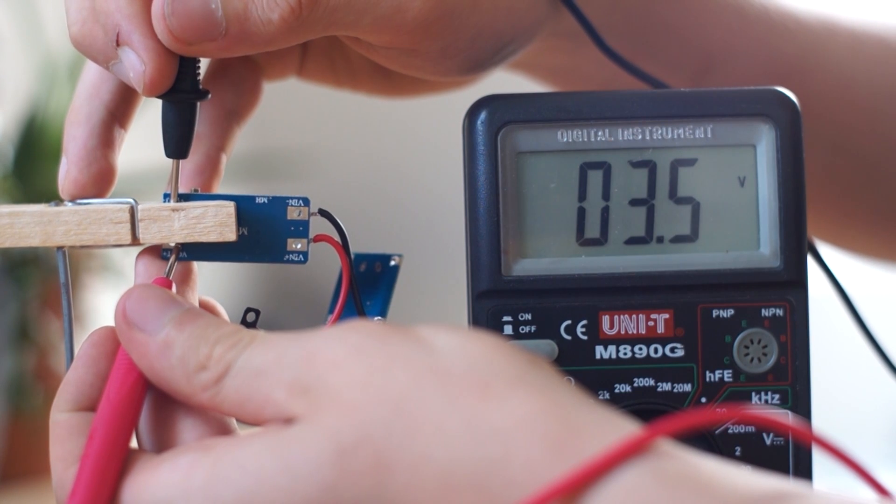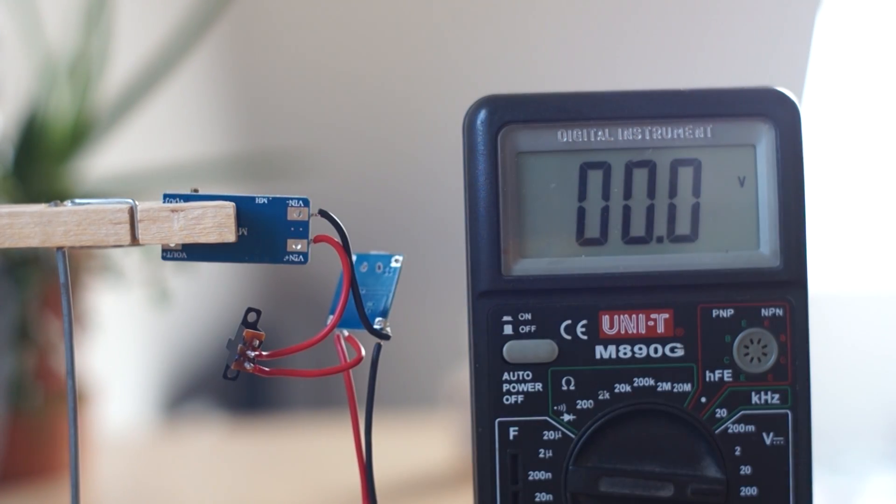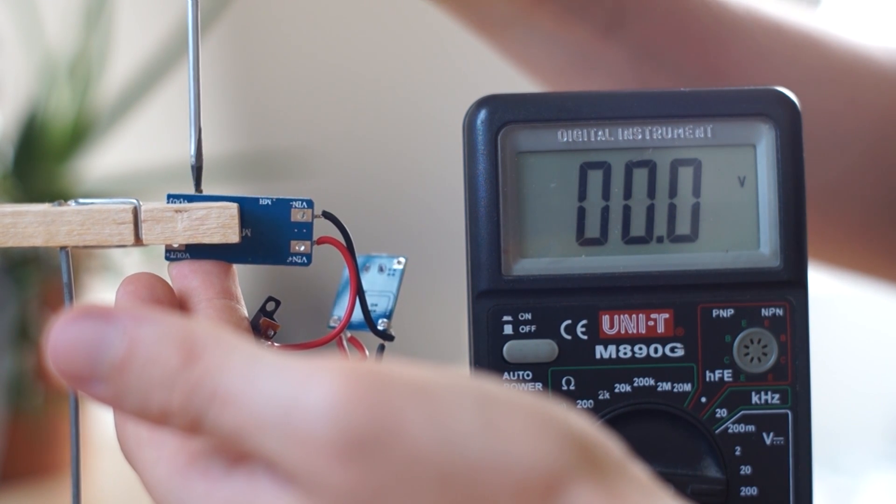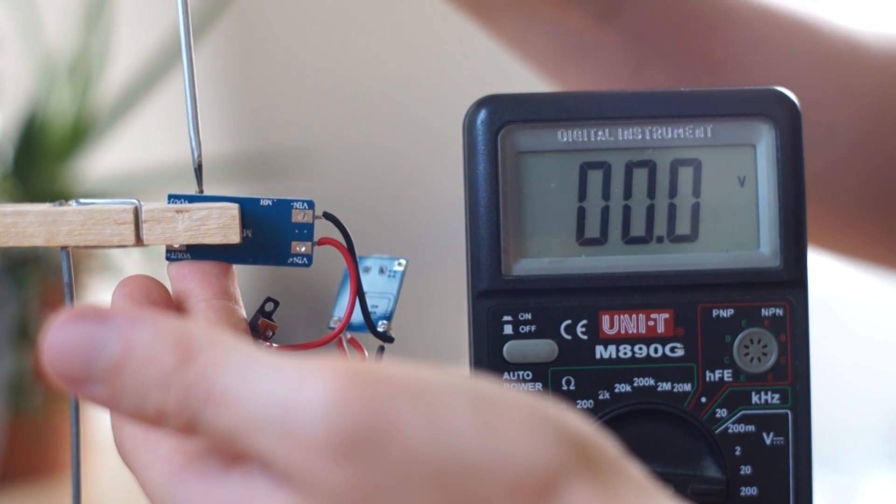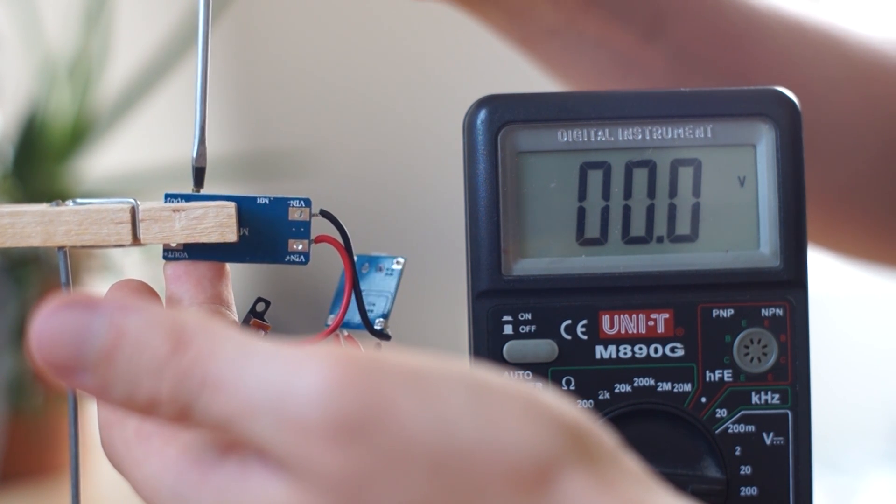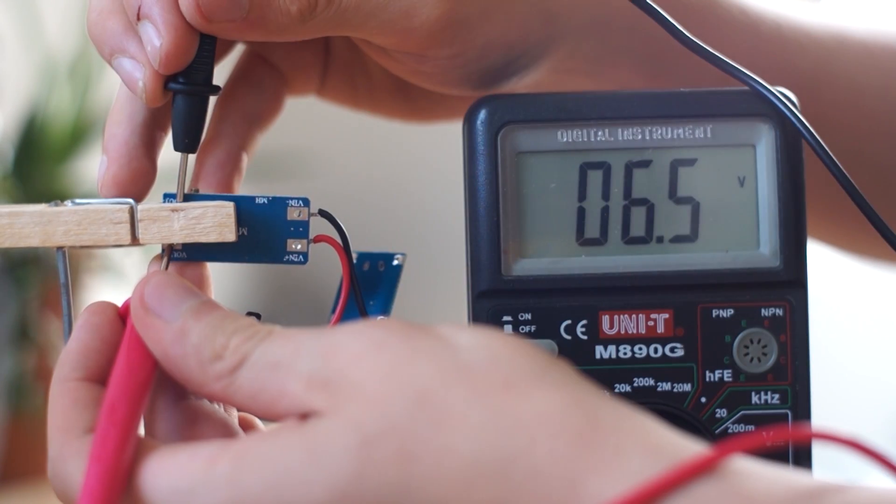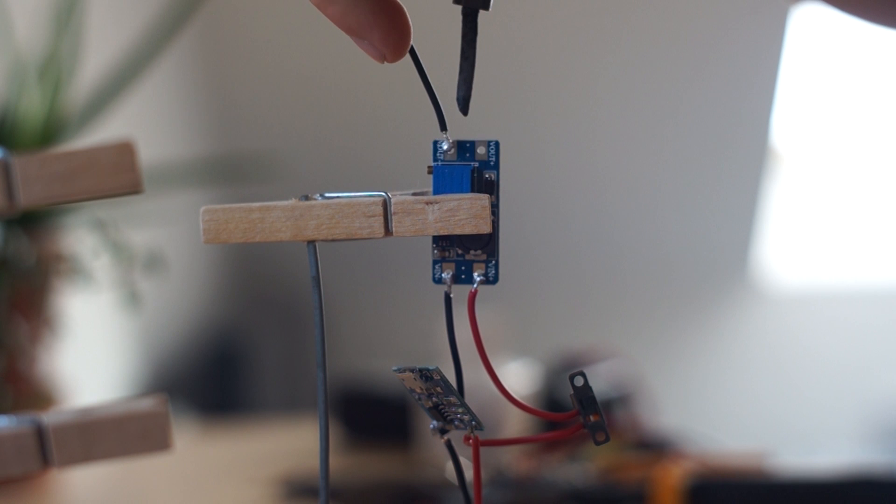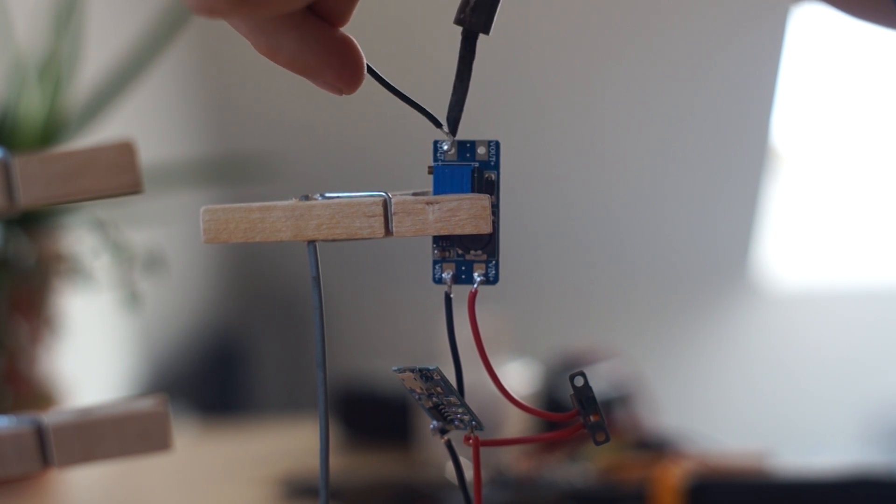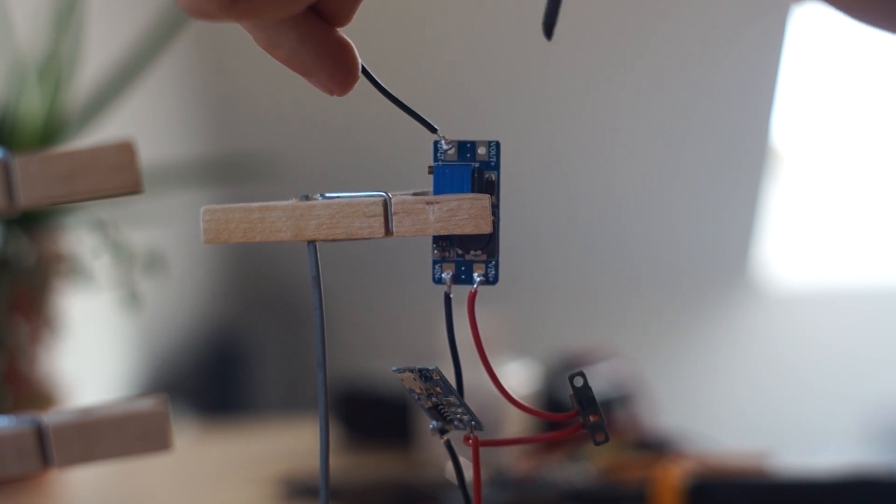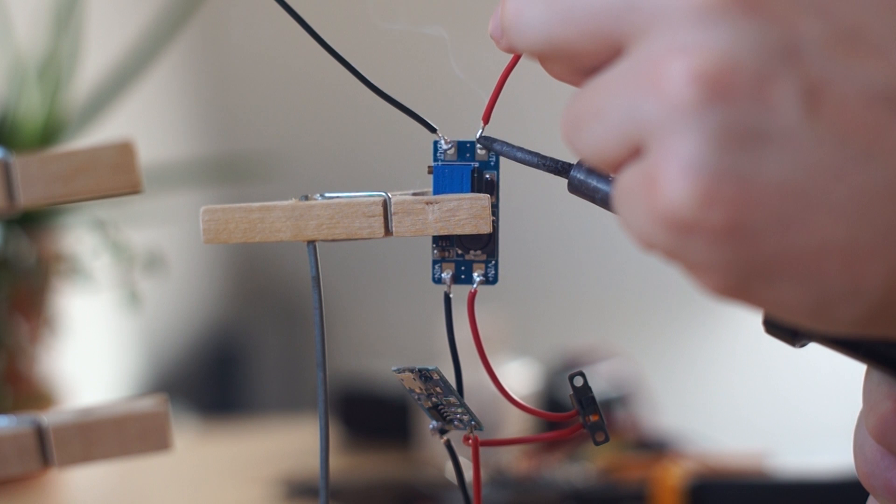Then we're going to go to the outputs and make sure first of all that our switch is turned on, and then on the outputs we're going to read the voltage, they'll probably be around 3.5 volts. Then we're going to twist the blue potentiometer on the step up module until we get a reading of 6.5 volts and then we're going to leave it at that, and then it's time to connect the bluetooth and amplifier.